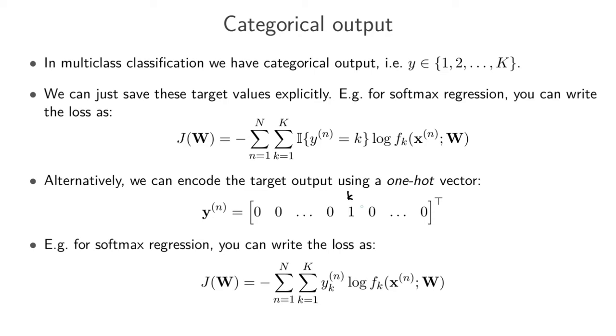If you have a one at dimension little k, then it means that the nth training item belongs to class little k. So if this thing belonged to the first class then we would have a zero here and a one here. If it belonged to the second class then we would have a zero there as well and then a one there.